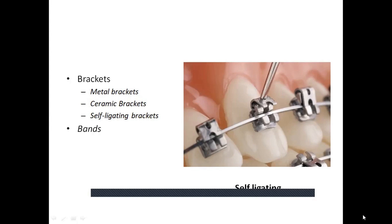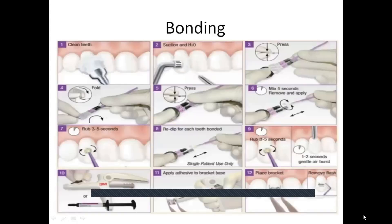Self-ligating brackets have a locking system incorporated into the bracket mechanism, eliminating the need for ligature placement. These systems are claimed to shorten treatment time by reducing friction, though these claims are generally controversial. In contemporary orthodontics, all teeth including molars may be bonded, though banding the molars is preferred by many clinicians. Before banding, separators are placed to create space for band fitting and cementation.